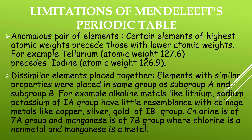Coming to the limitations of Mendeleev's periodic table. First, anomalous pairs: certain elements of higher atomic weights precede those with lower atomic weights — for example, tellurium (127.6 units) is placed before iodine (126.9 units). Second, dissimilar elements are placed together: alkaline metals like lithium, sodium, and potassium in group 1A have little resemblance with coinage metals like copper, silver, and gold in group 1B. Similarly, chlorine (7A, a non-metal) and manganese (7B, a metal) have been placed together, which is a contradiction.